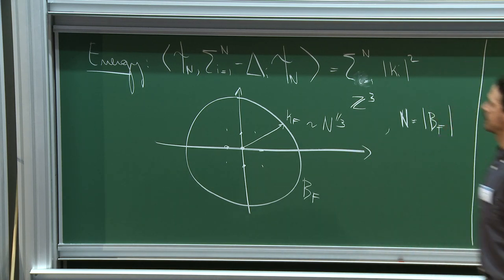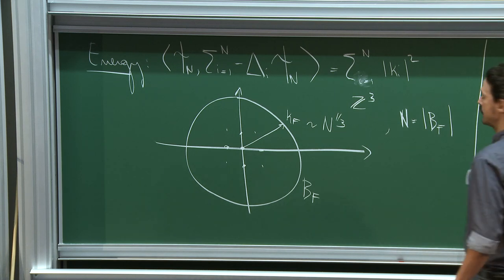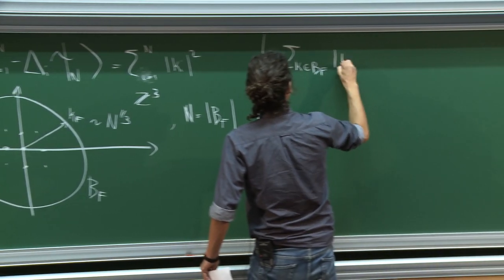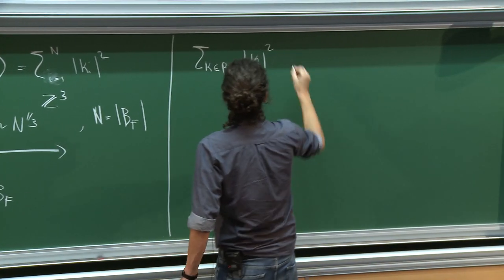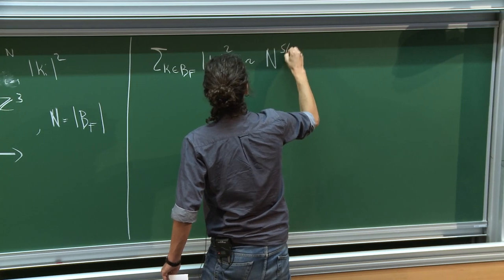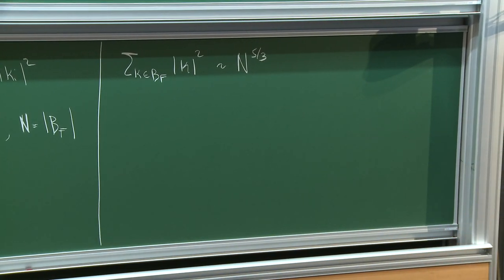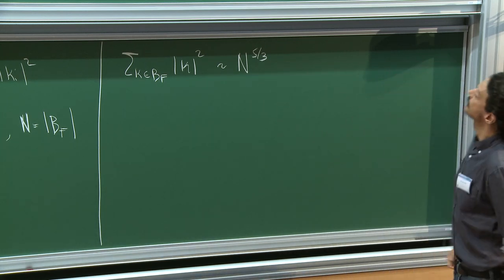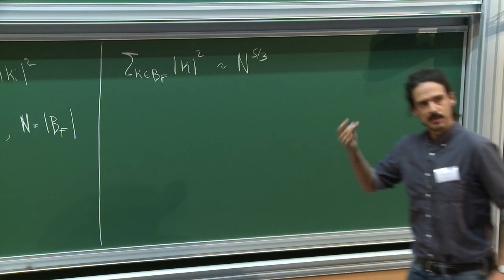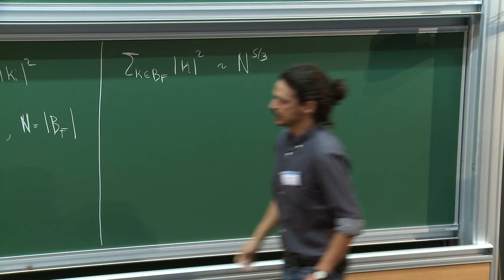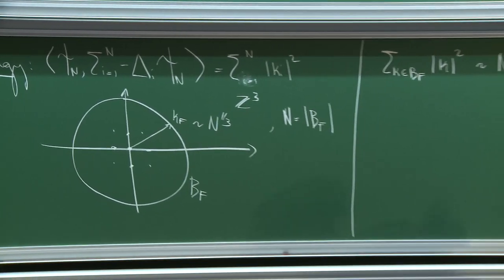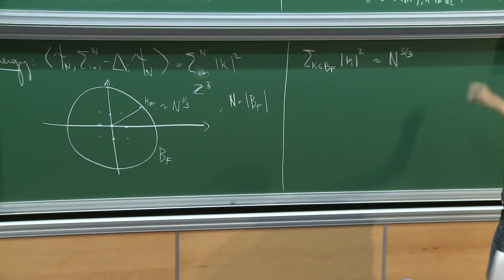Summing |k|^2 over k in the Fermi ball gives something asymptotic to N^{5/3}. The Pauli principle makes the kinetic energy higher than in the bosonic case. This is captured by general lower bounds called the Lieb-Thirring inequality. The parameter epsilon^2 is there to turn this kinetic energy into something of order N.